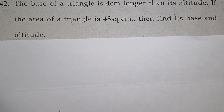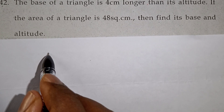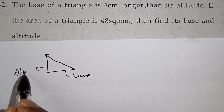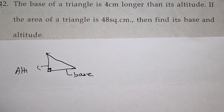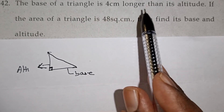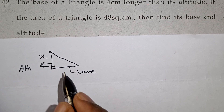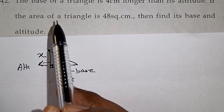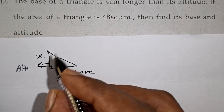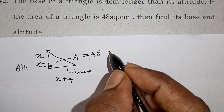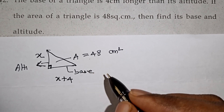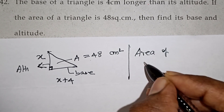The next question: the base of a triangle is 4 cm longer than its altitude. Altitude means height — the line which makes a 90-degree form, which is why we consider a right-angle triangle. If the altitude is x, then the base is x plus 4. The area of the triangle is 48 cm². Find the base and altitude.